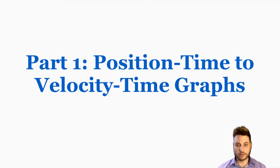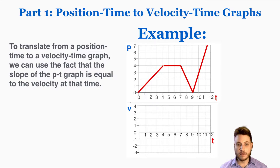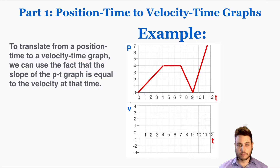We'll start off by going from position to velocity graphs. To translate from a position-time to a velocity-time graph, we can use the fact that the slope of the position-time graph is equal to the velocity at that time. I'm going to break this up into sections where the graph has different slopes, drawing vertical lines to indicate where the slope — and therefore the velocity — changes.